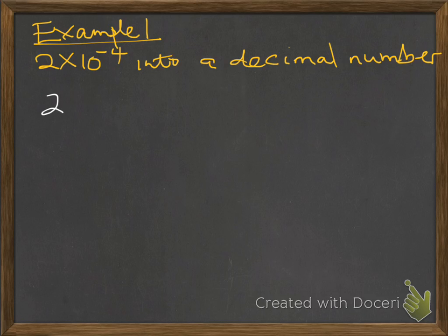We say 2 times, we know that 10 to the power minus 4 is the same as 1 over 10 to the power 4. Therefore this will stand like this: 2 over 1 times 1 over 10 to the power of 4.